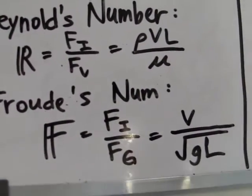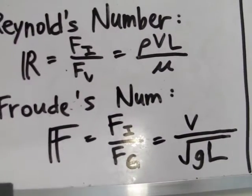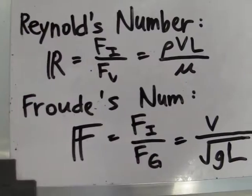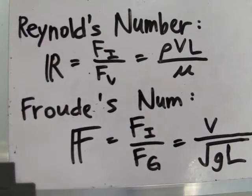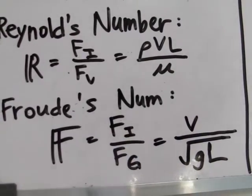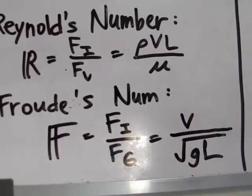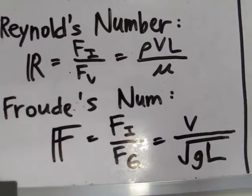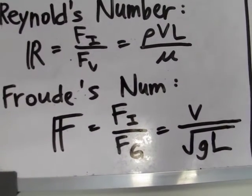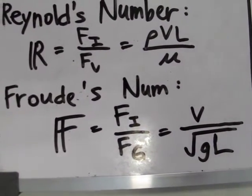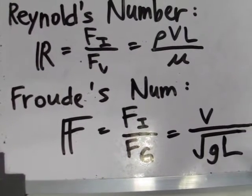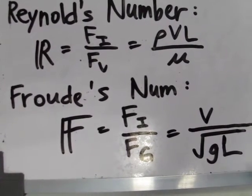Next is Froude's number. In this number, the predominant force is the gravitational force. So if the problem states that the gravitational forces are predominant, you should use this number. Froude's number is equal to the velocity over the square root of g times L, where g is gravity and L is the length.